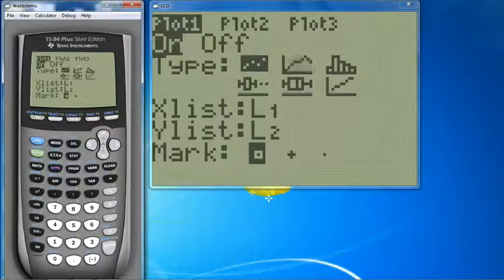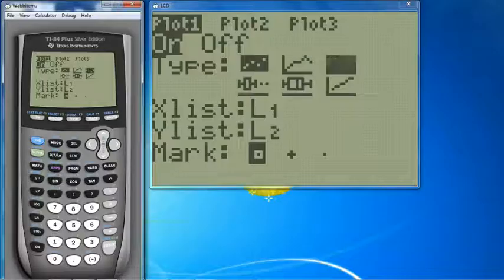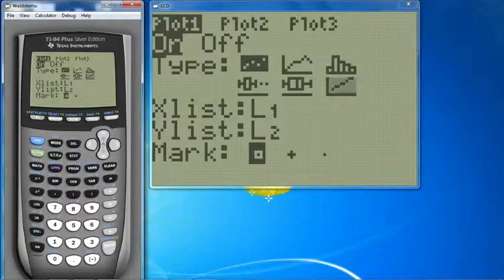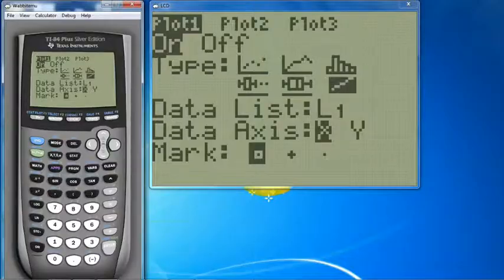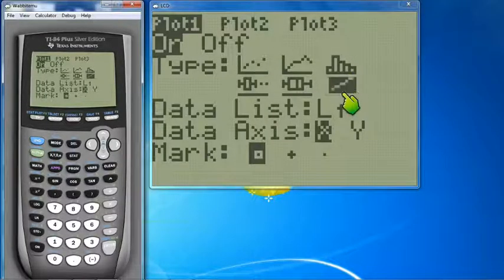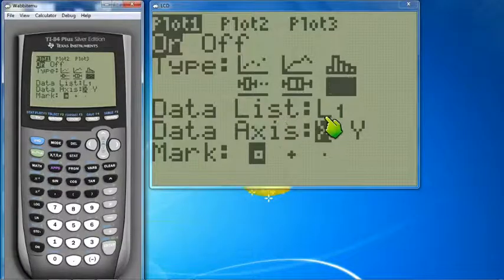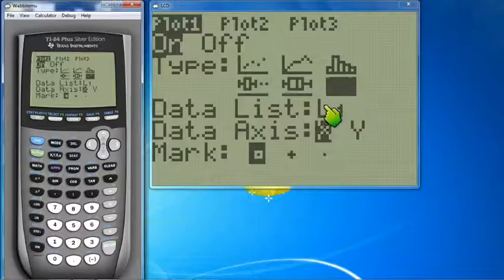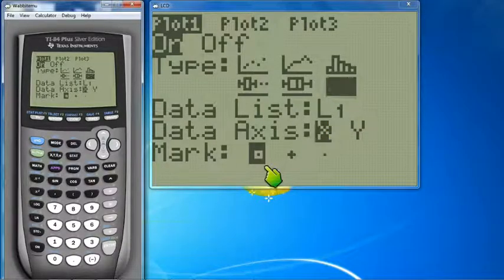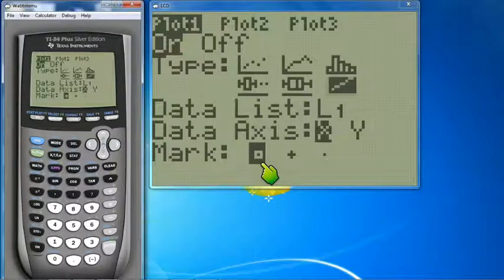We just have these refrigerators we're going to graph. So we're not going to make a scatter plot, connected scatter plot, histogram, or box plots. We're going to go to this bottom right option. That's a normal probability plot. That's a special graph for statistics. The list, if you put in L1, this should say L1. The axis is X. The mark you want to make it with, that works. And then let's just go ahead and hit graph.